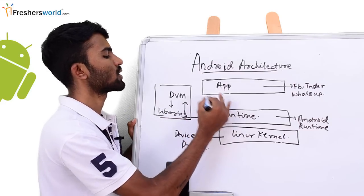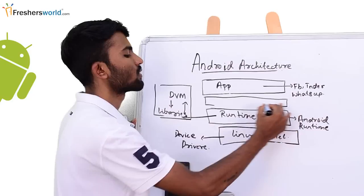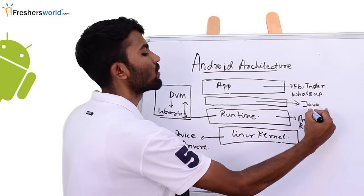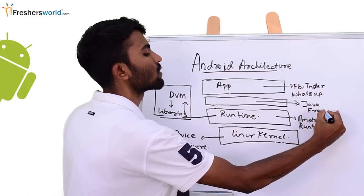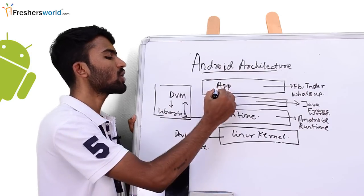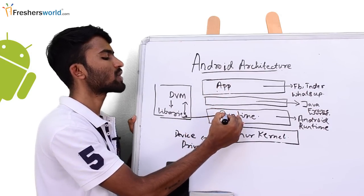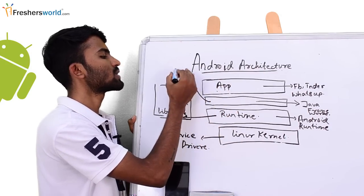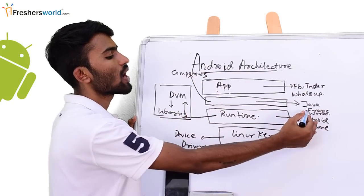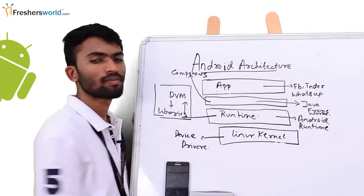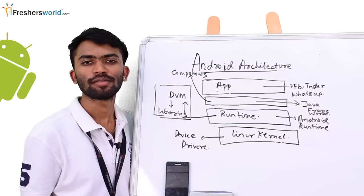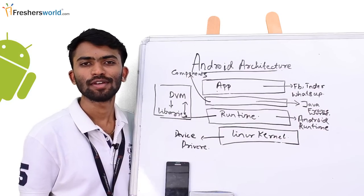So let's see what is the next layer. This layer would be your Java frameworks. So why are Java frameworks used? You want to run your app onto the Android runtime, and you need to have some components helping you. These components are nothing but Java frameworks. Android coding is mainly on Java. Please subscribe to our YouTube channel for more Android videos. Thank you.